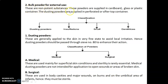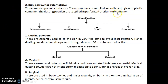Second is bulk powder for external use. These are non-potent substances supplied in cardboard, glass, or plastic containers. Dusting powders are supplied in a perforated or sifter-top container. The classification of bulk powder for external use includes dusting powder, insufflations, snuffs, and dentifrices.